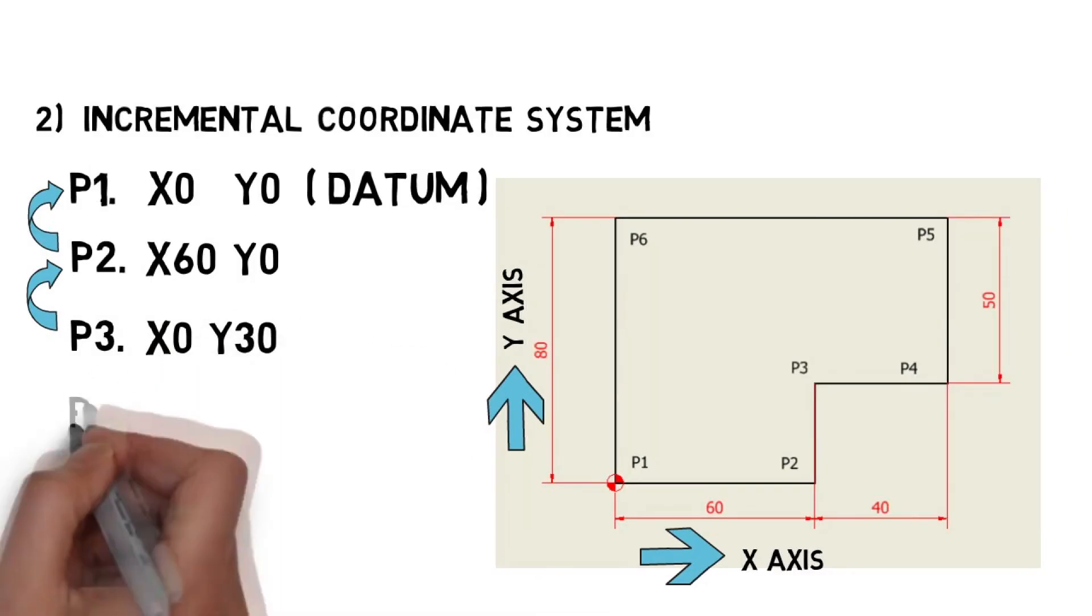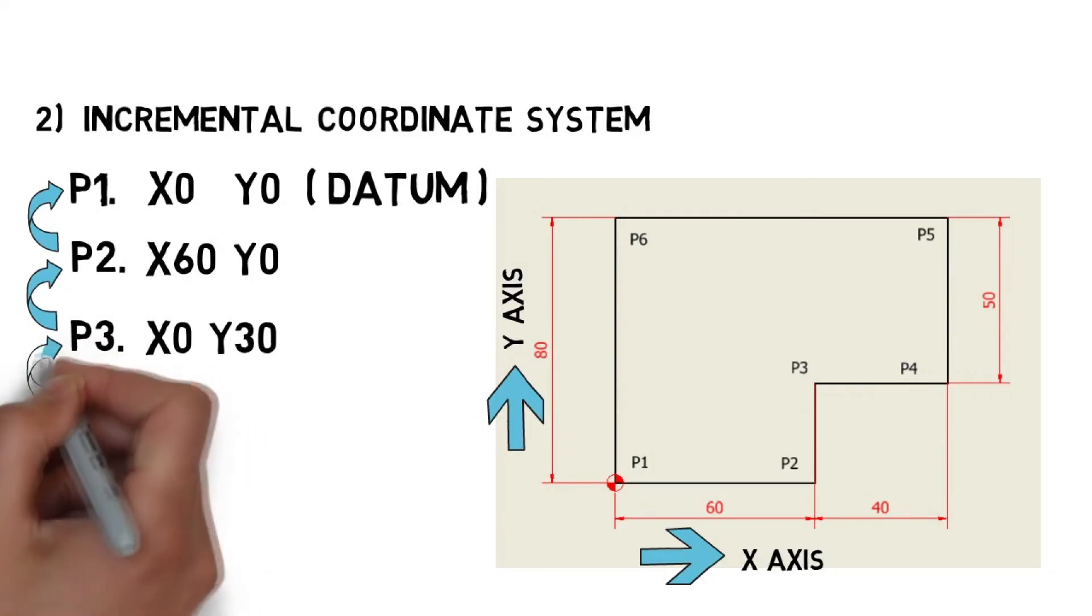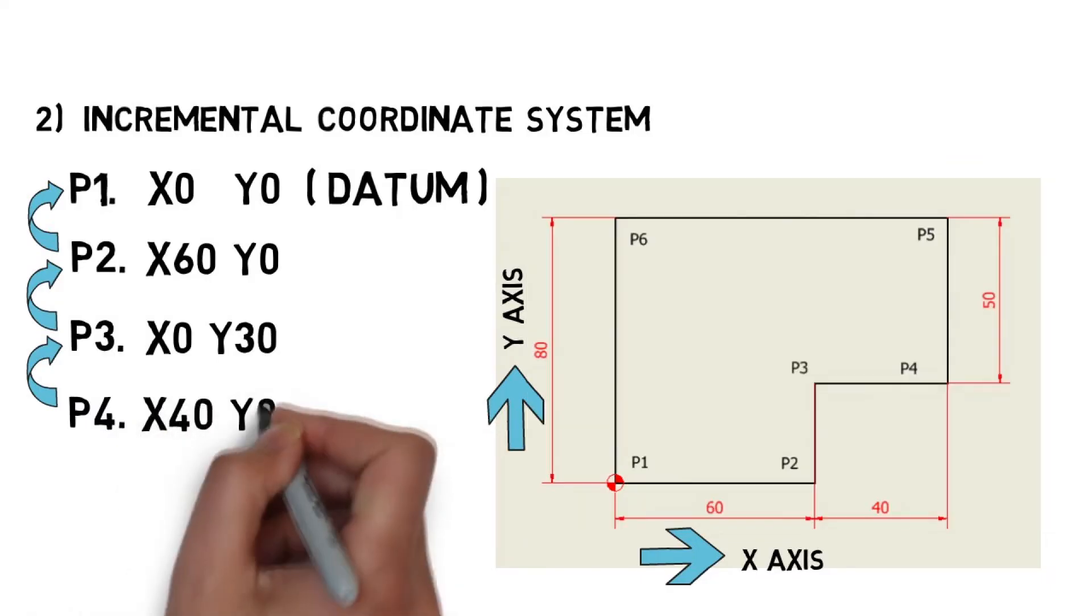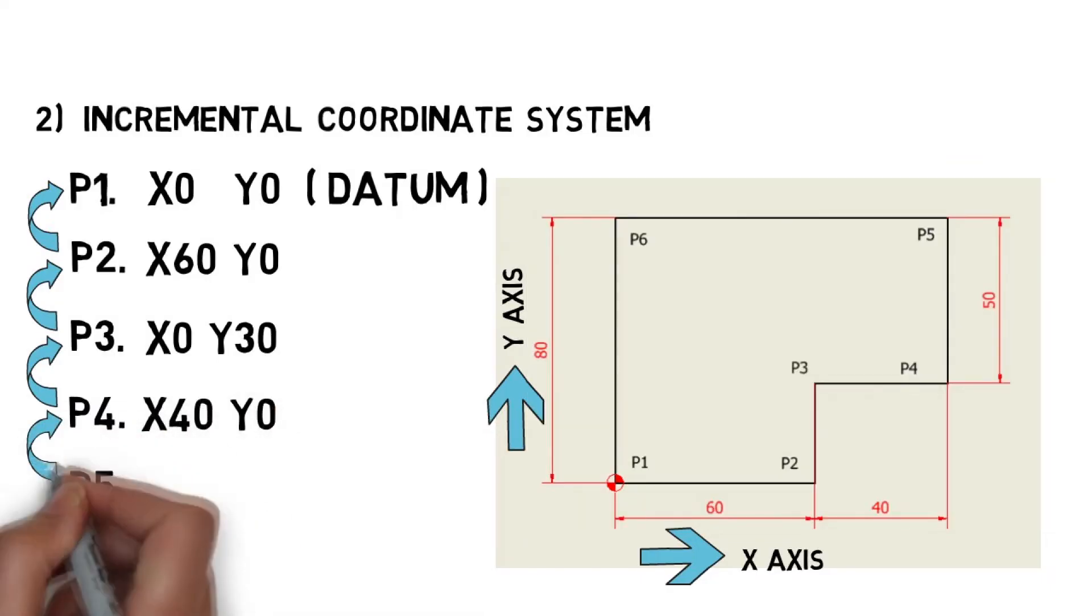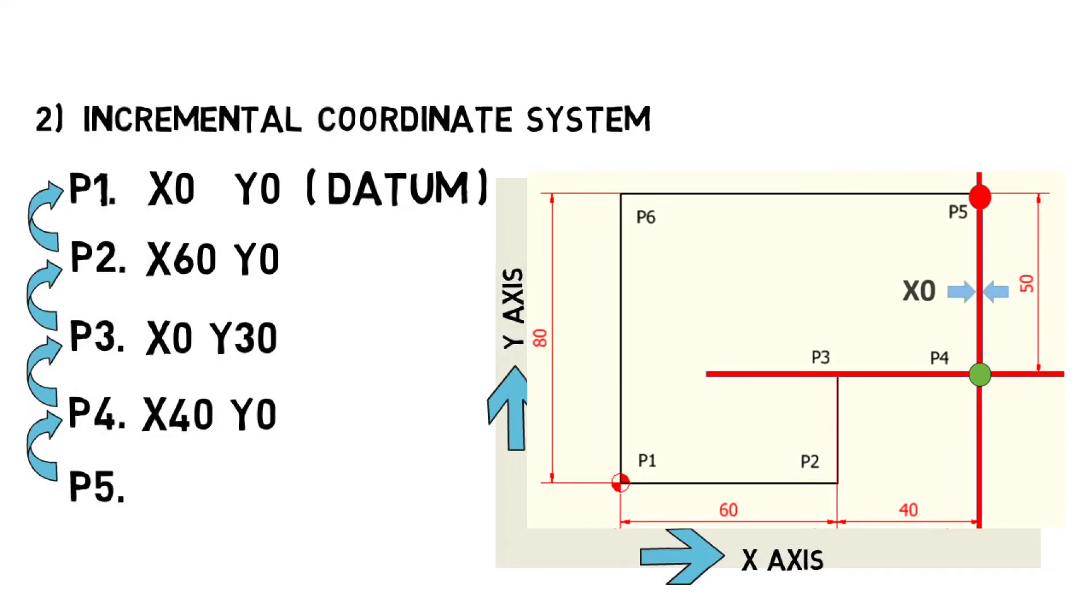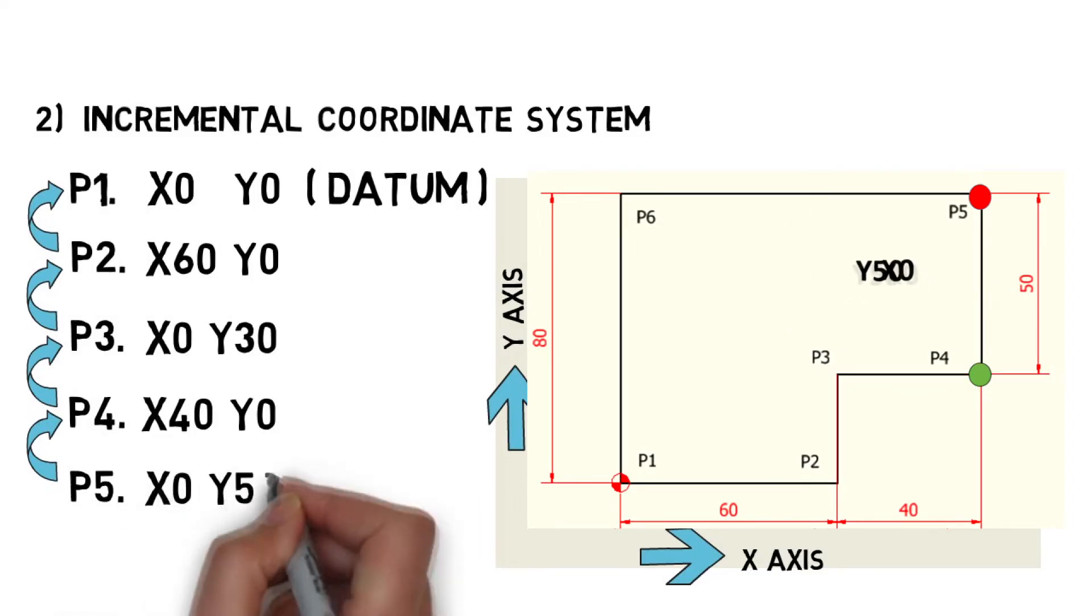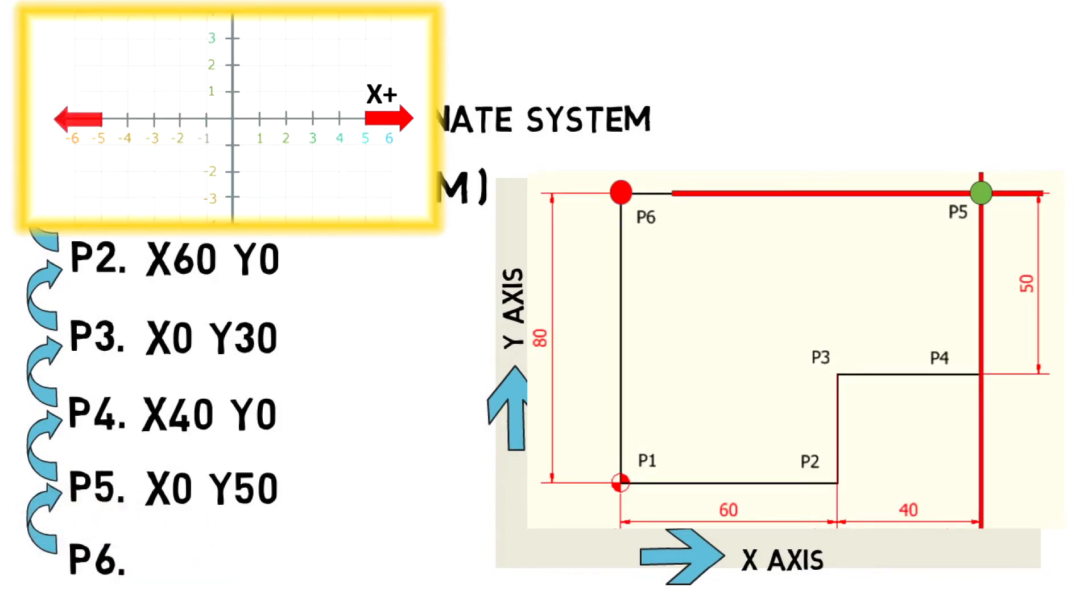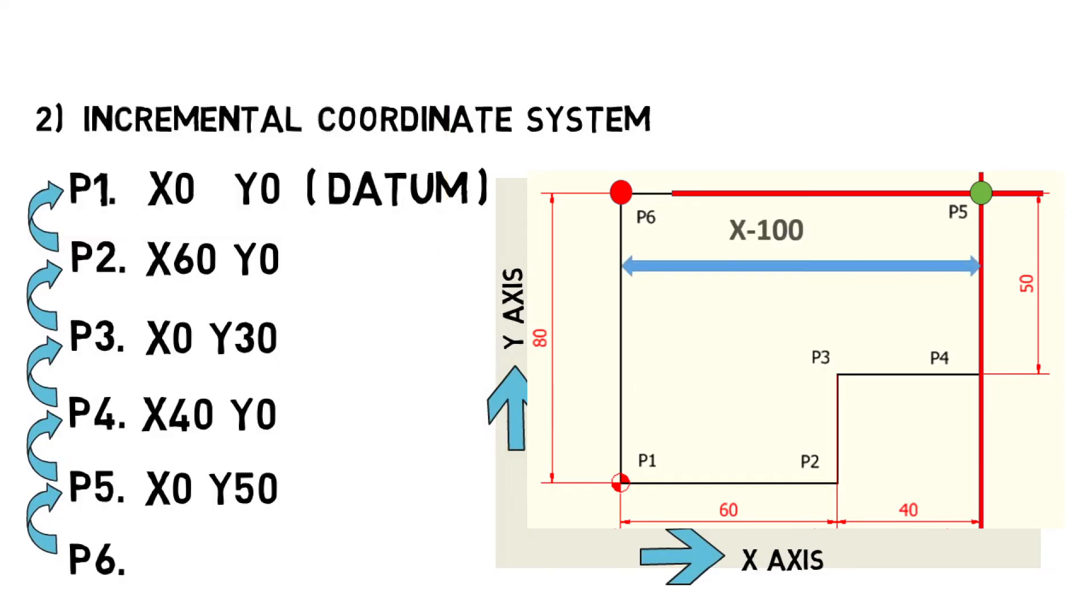P4, P3 is the origin for P4, then X distance is 40 and Y distance is 0. Finally, P6, for P6, P5 is the origin. Here, X is on the negative direction, so X distance is X-100 and Y distance is 0.